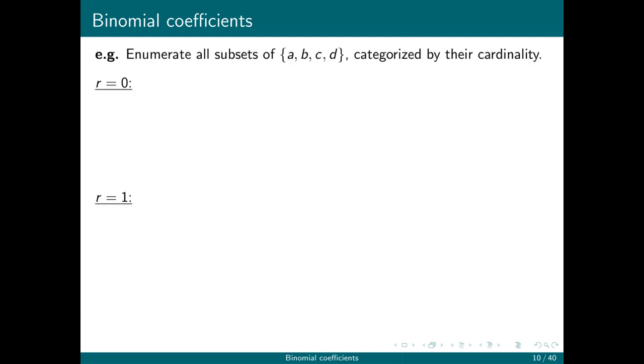So for example, we're going to enumerate all subsets of the set {a, b, c, d}, and we're going to categorize them by their cardinality. In other words, I'm going to group the subsets by how many elements are in them. So if r equals 0, there's only one empty set, and that's the empty set. And so there's only one of these.